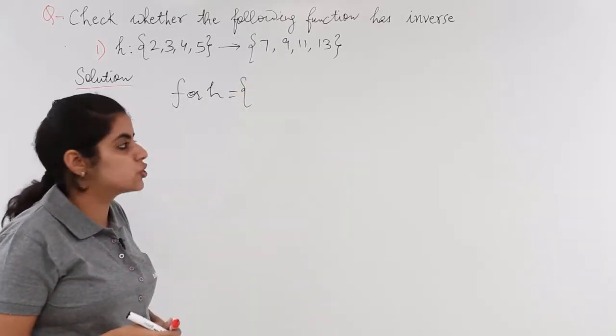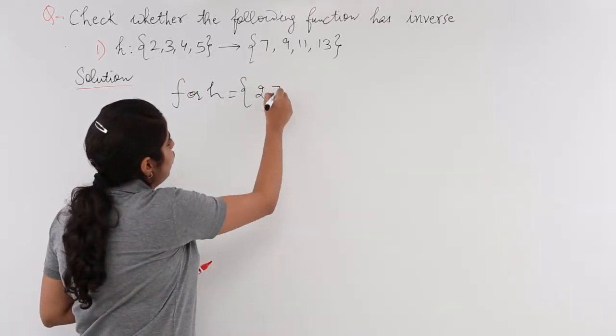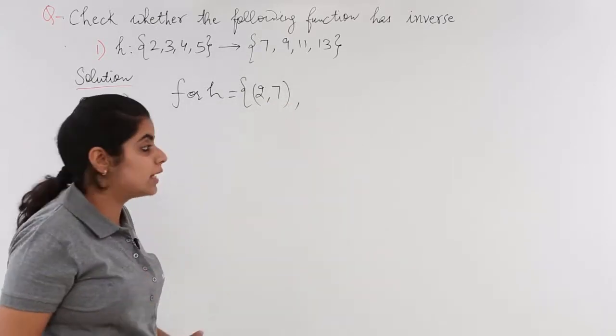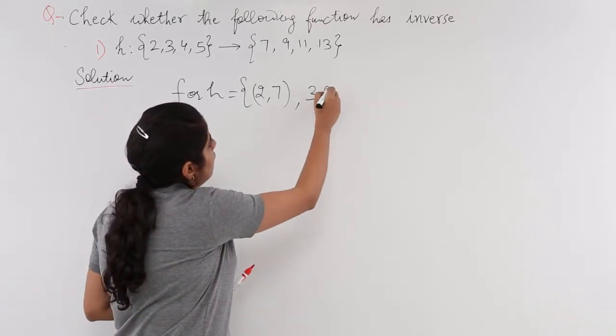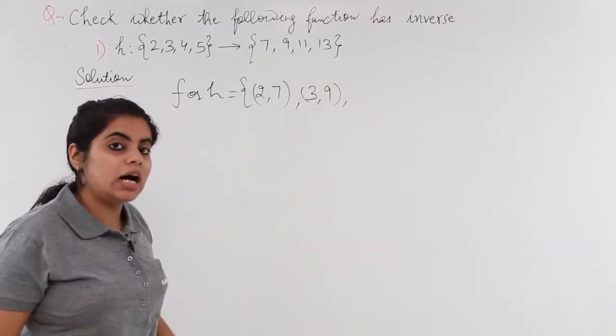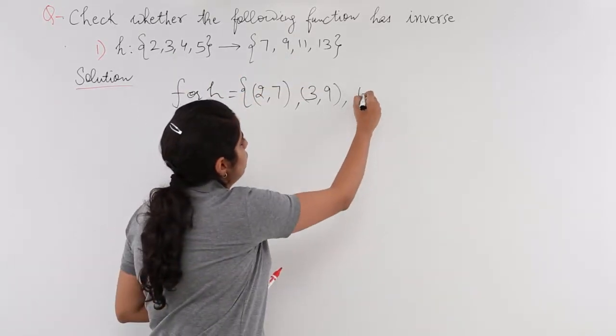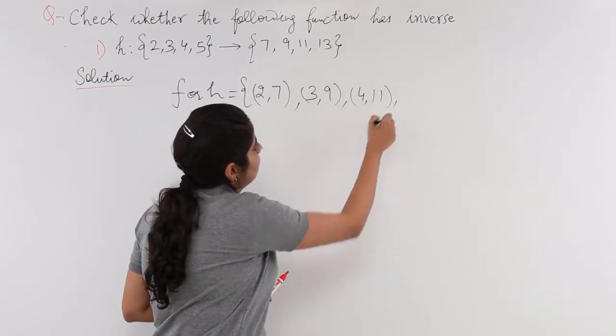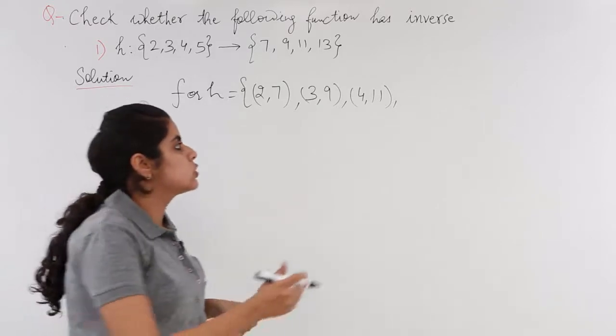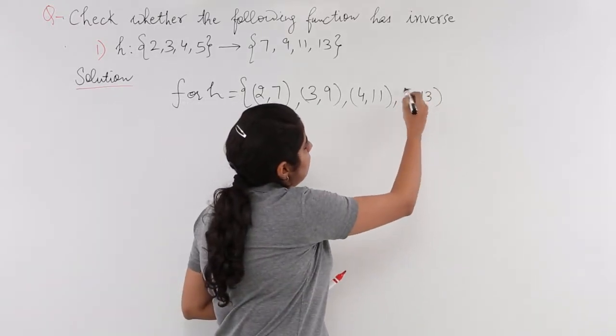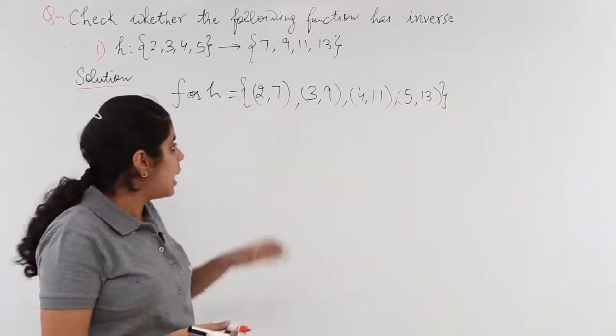Now what is the ordered pair relationship? 2 is associated with 7 so you write 2 comma 7, then 3 is associated with 9 so you write 3 comma 9. 4 is associated with 11 so you write 4 comma 11, and 5 is associated with 13 so you write 5 comma 13. Now these four correspondences or mappings are enlisted.